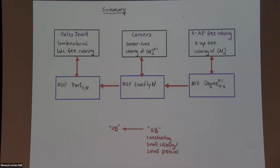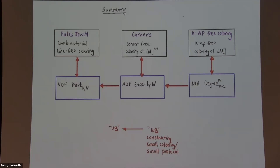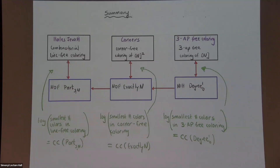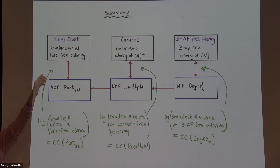I'll mostly focus on the left side of the diagram. To clarify what these arrows mean: the log of the smallest number of colors for a given coloring problem is going to be essentially equal to the deterministic communication complexity of the corresponding communication problem — number-on-forehead means number-on-forehead throughout. Very recent results for the first time in a long time improve upon Behrend. I'll show how they achieve this by viewing these additive combinatorics problems through the lens of communication complexity.